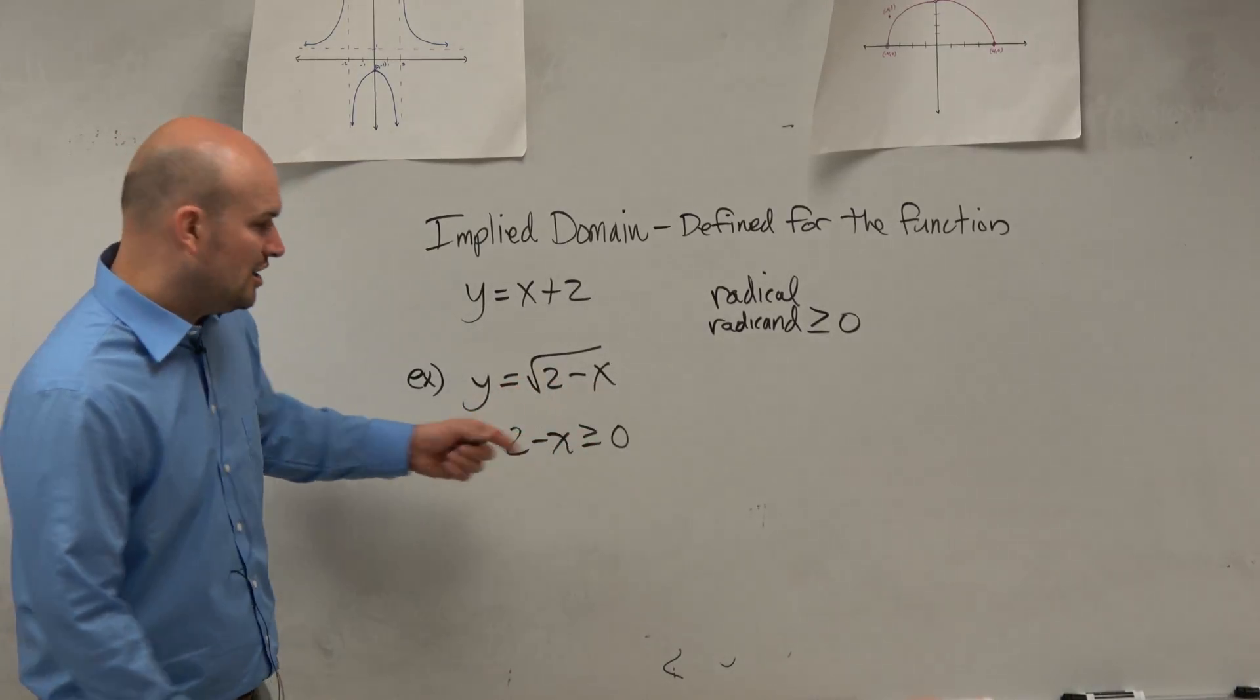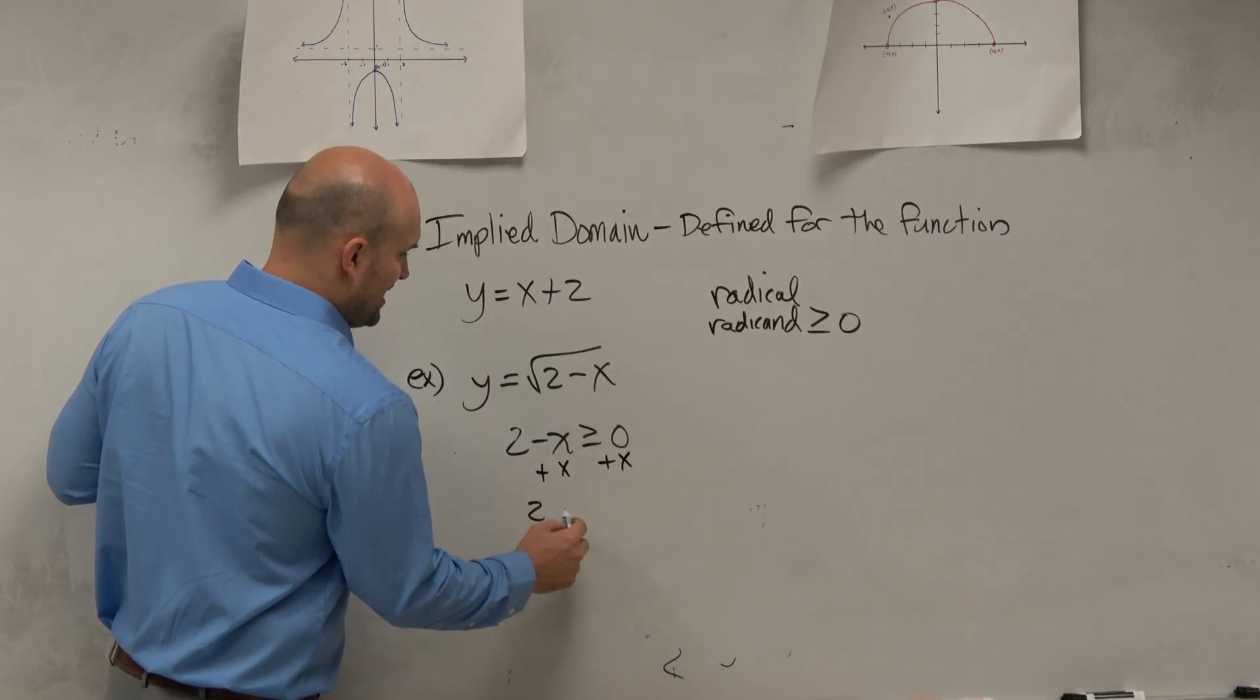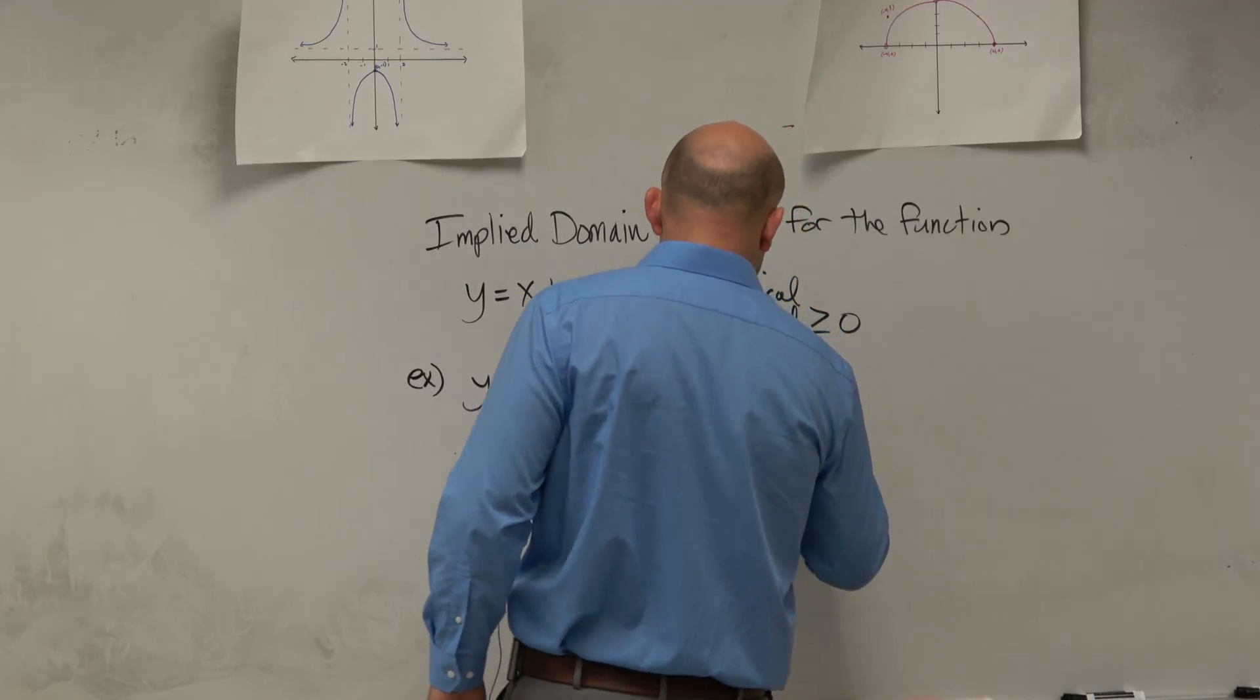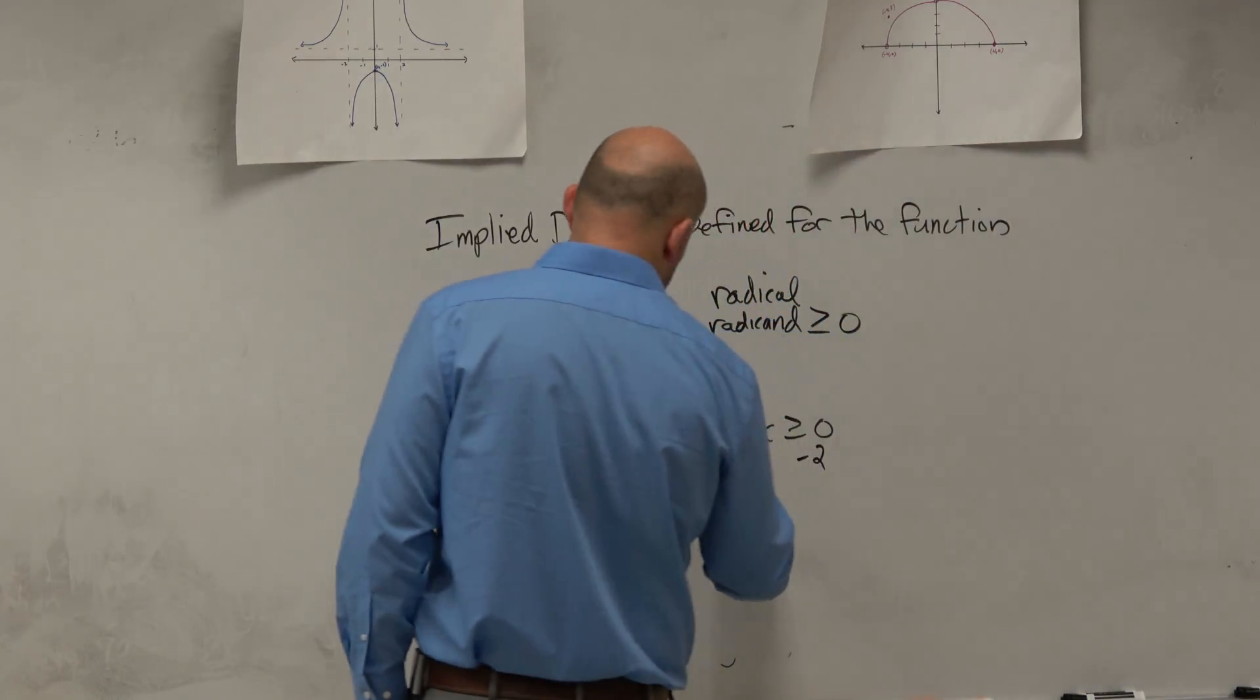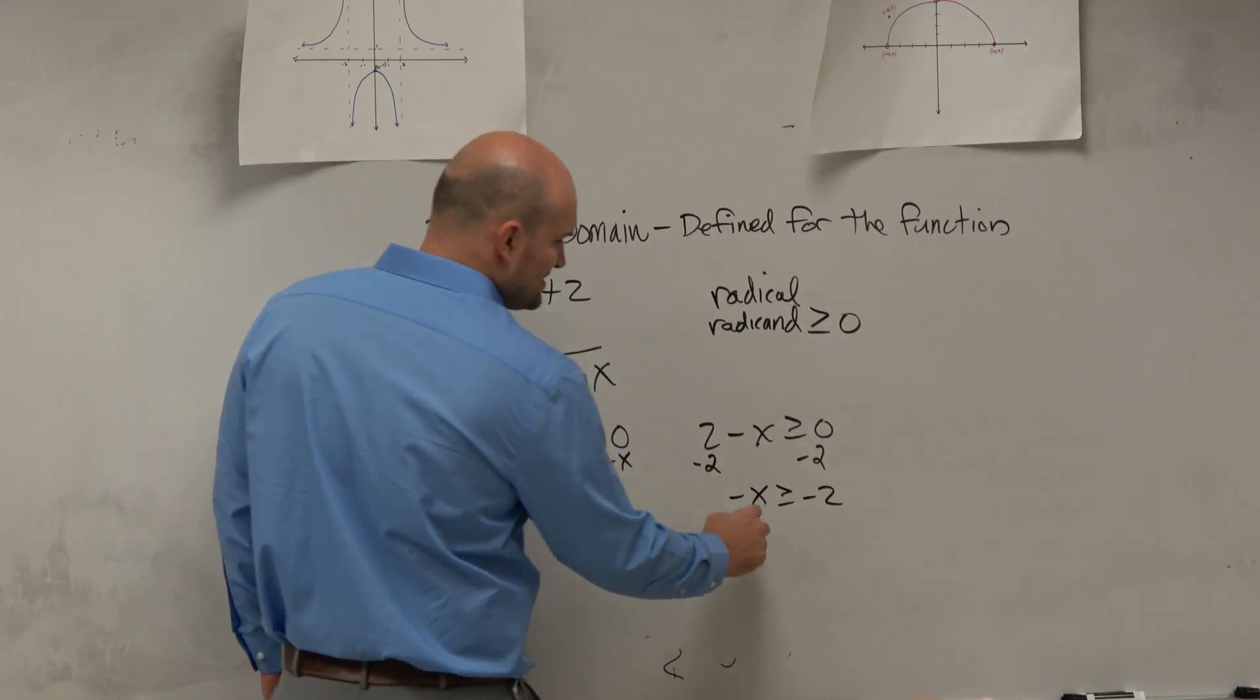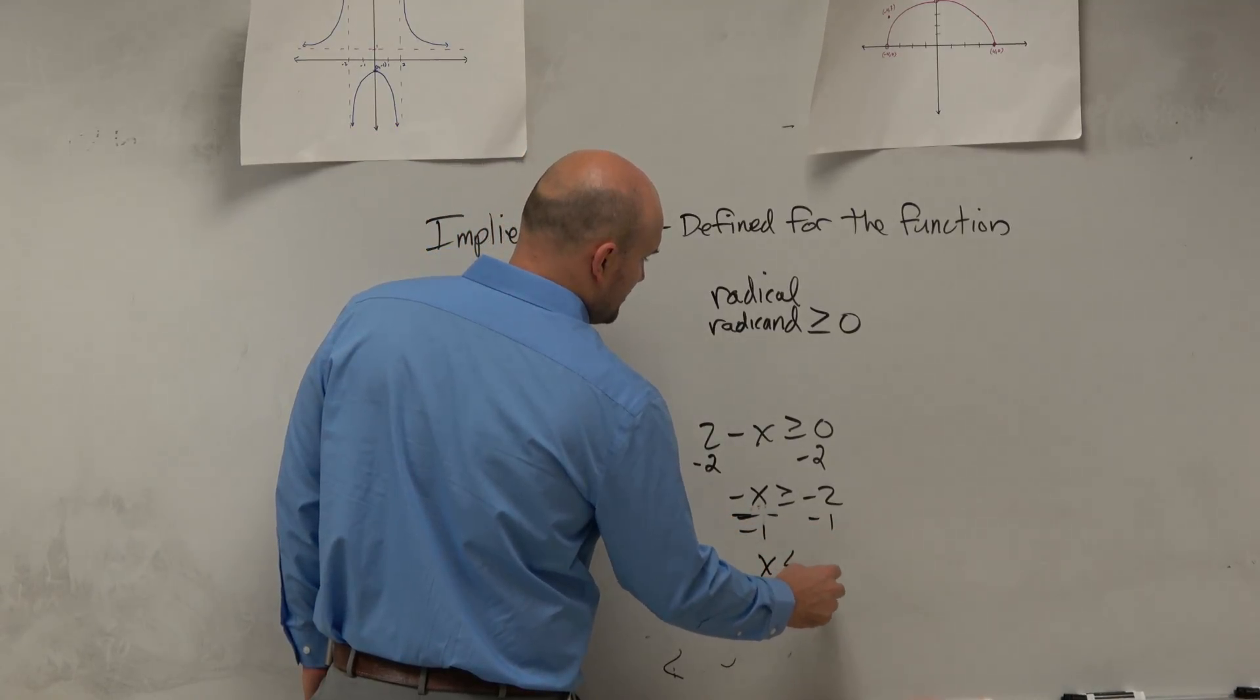Now we can solve this a couple different ways. We can add x to both sides and we'd have 2 greater than or equal to x. We could also do inverse operations, but if you're going to follow inverse operations, meaning subtracting the 2, just remember what happens when you multiply or divide by a negative when solving inequalities. You've got to flip the sign, right? And the reason why is that's going to make our inequalities now true.